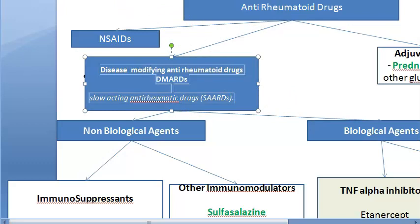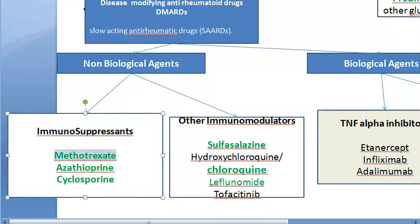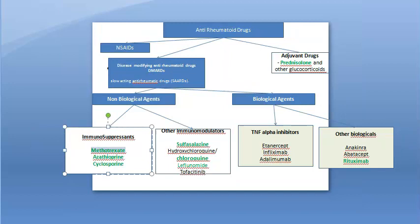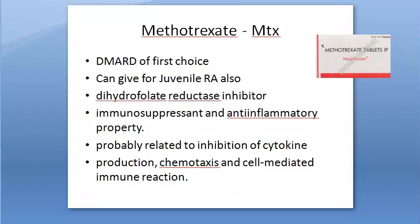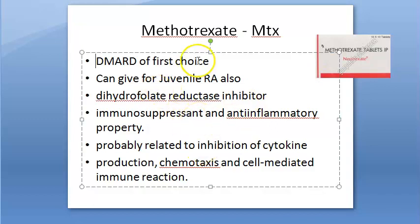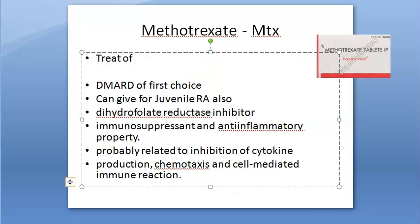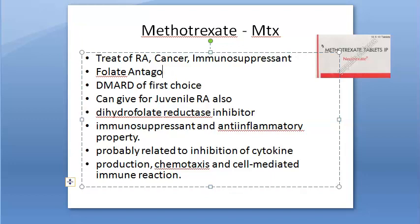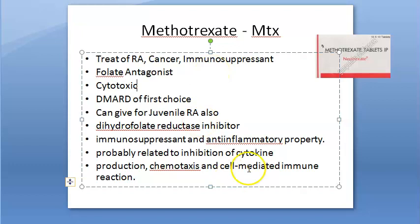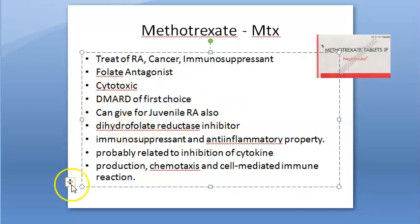In DMARDs you have two types: non-biological agents and biological agents. We want to look at the non-biological agent, methotrexate. Methotrexate is not just an anti-rheumatoid drug — it is also an anti-cancer drug and an immunosuppressant. It is a folate antagonist, a cytotoxic drug, and the DMARD of first choice. It can also be given for juvenile rheumatoid arthritis.